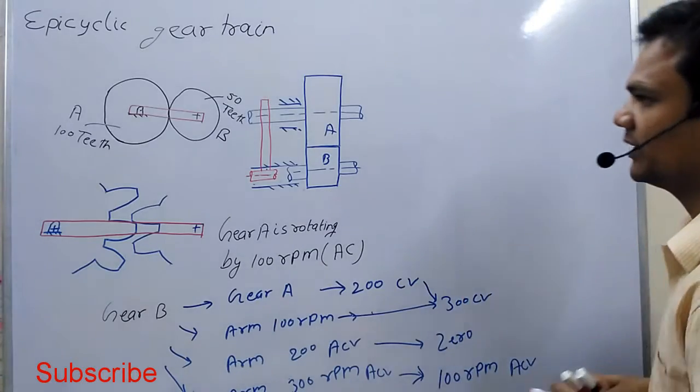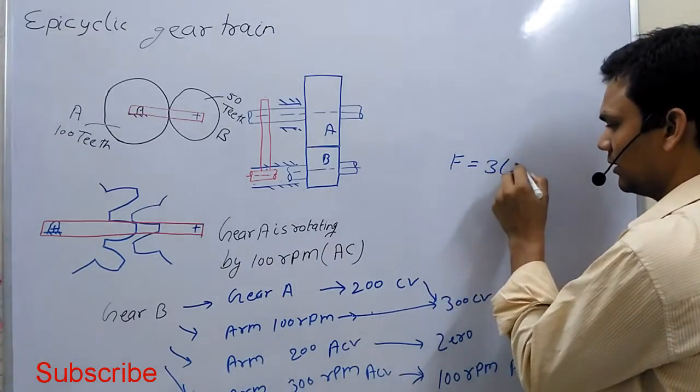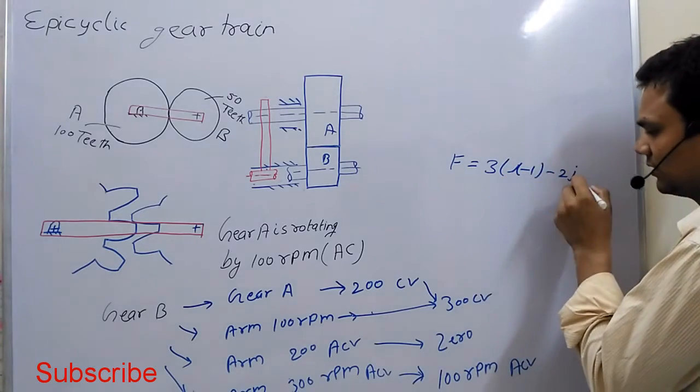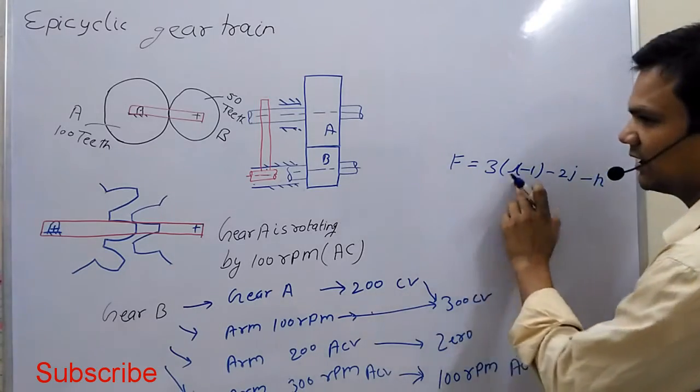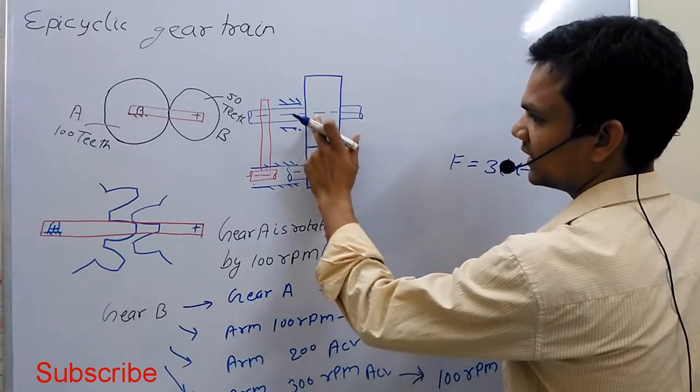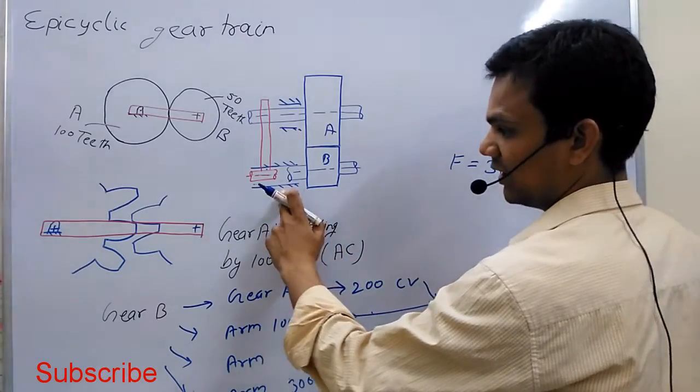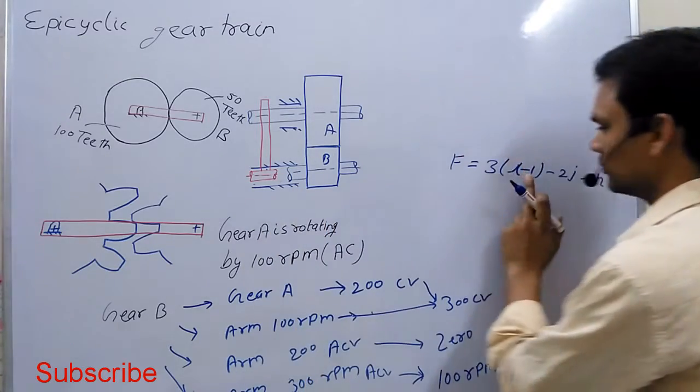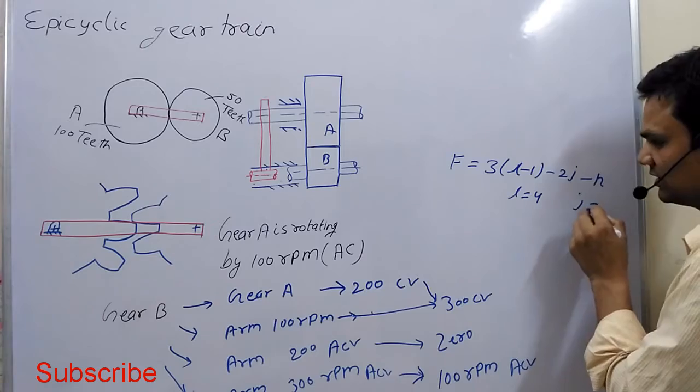We calculate the degree of freedom. The formula is 3(l-1) - 2j - h, where l is links, j is joints, and h is higher pairs. There are four links: first, second, third, and fourth is fixed. Total number of joints is four.